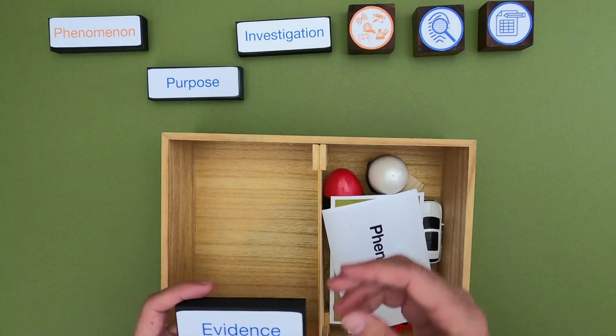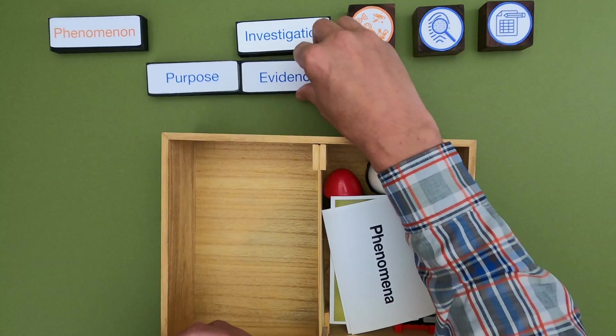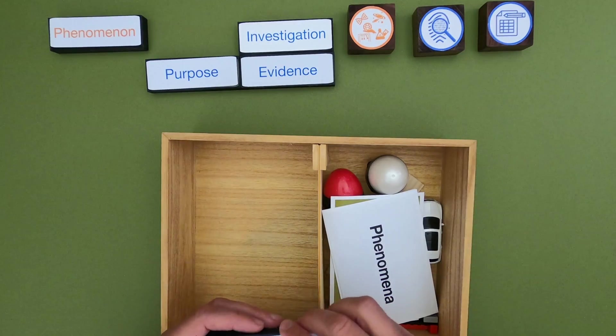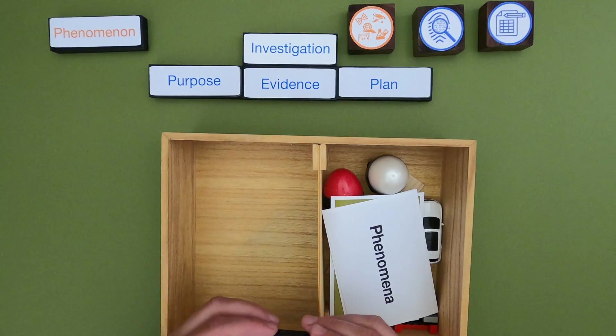First we start with the purpose. Why are we doing the investigation? Next we think about what is the evidence that we're actually going to gather. And then finally we're going to come up with an investigation plan that's going to detail what we're going to do.